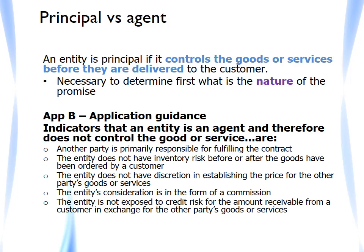IFRS 15 included guidance stating that an entity is the principal if they control the good or service before it is transferred to the customer. However, the indicators in Appendix B were the same as those in IAS 18, used to determine whether an entity is acting as agent. Some stakeholders noted a disconnect — the principle introduced by IFRS 15 asks who controls the goods or services before transfer, but the indicators are framed from the agent's perspective. This is one of the areas addressed by the boards as part of the clarifications.